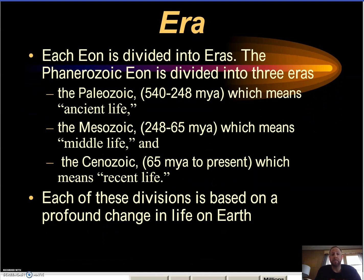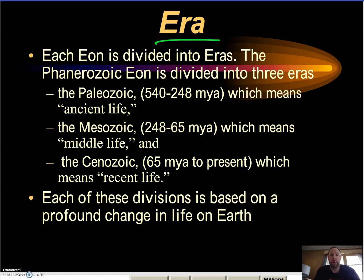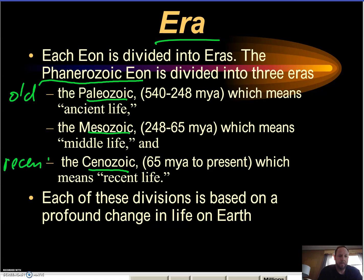The eons are broken down into eras. We're not going to get too far into the Precambrian — we're going to stick to the Phanerozoic because that's the time period with the most important information. In the Phanerozoic eon we divide into Paleozoic, Mesozoic, and Cenozoic. Paleozoic is the oldest and Cenozoic is the most recent. Paleozoic runs from 540 to 248 million years ago, and it means 'ancient life' for those who love a good Latin lesson.